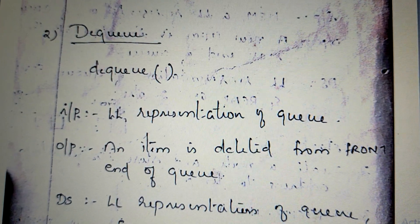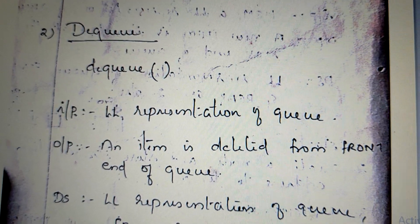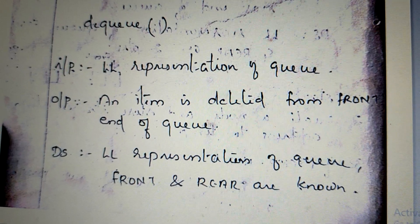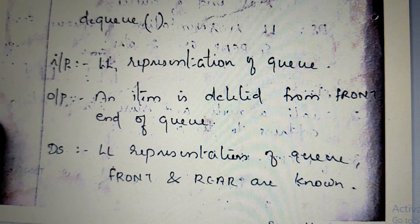Next is the deque operation. The deque has a rear end and a front end. The input is the linked list representation of the queue. The output is the deleted element. The data structure is the singly linked list, with front and rear pointers.